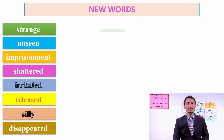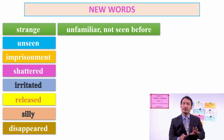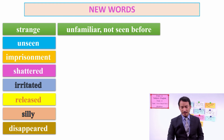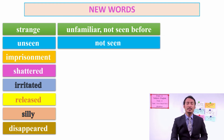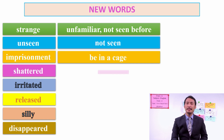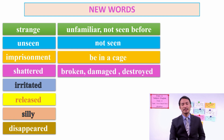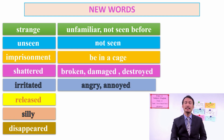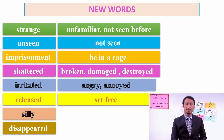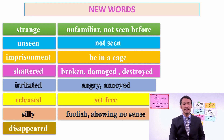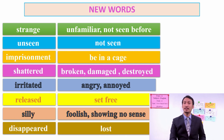The meanings of these words are: unseen means not seen or unfamiliar — not seen before. Imprisonment means being kept in a cage. Shattered means broken, damaged, or destroyed. Irritated means angry or annoyed. Released means set free. Silly means foolish or showing no sense. And disappeared means lost or not in sight.